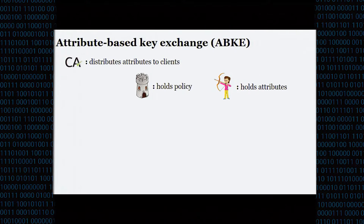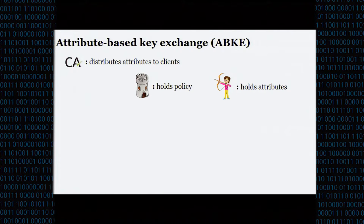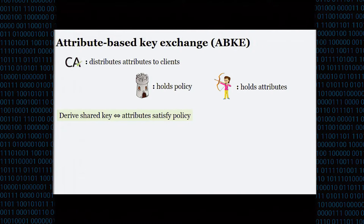Let's dig into this a bit more. We'll denote the server as a castle and the client as an archer. The server holds a policy and the client holds a set of attributes. We also need a certificate authority to assign these attributes to the clients — all attribute-based constructions require some notion of a CA. What we want is that these two parties can derive a shared key if and only if the attributes satisfy the policy.